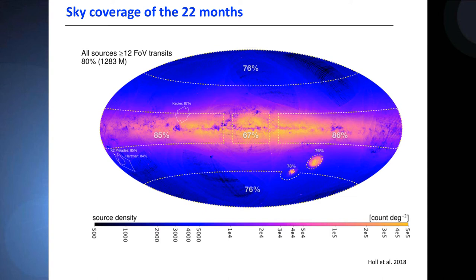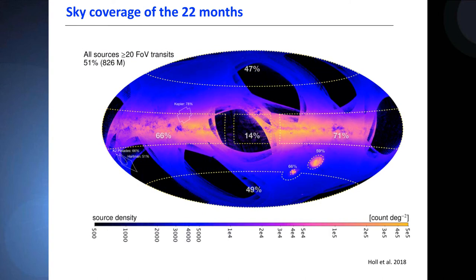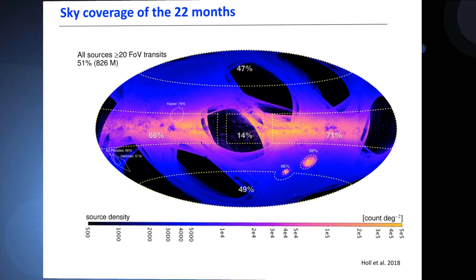Now if we go to 20 field of view transits, we see the footprint of the scanning law. There are regions where no stars are observed with 20 field of view transits. In the galactic bulge, only 14 percent of the stars are covered with this number of measurements. Obviously with time going on, we will have a more uniform covering of the sky.